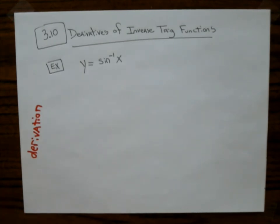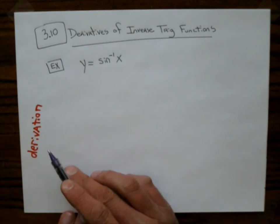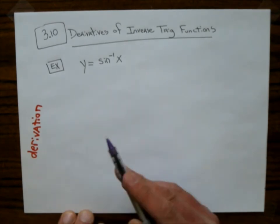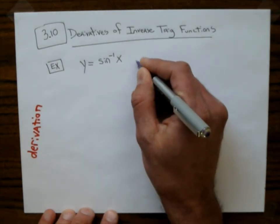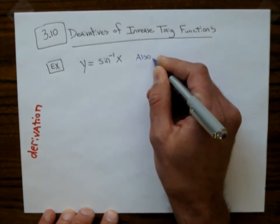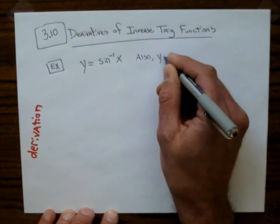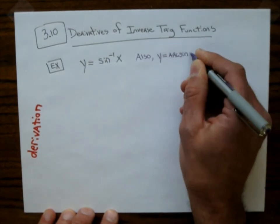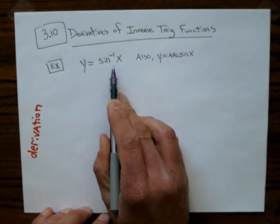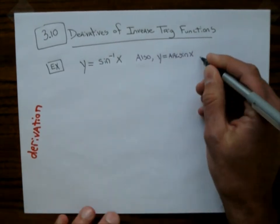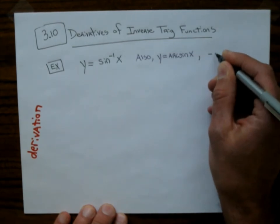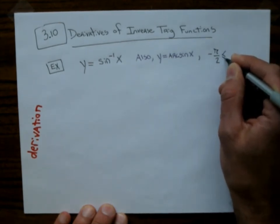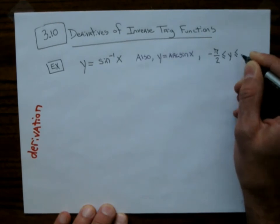The first thing we want to look at is y equals sine inverse of x. This is a derivation of this. We can also write this as y equals the arc sine of x. This book will be using sine inverse.